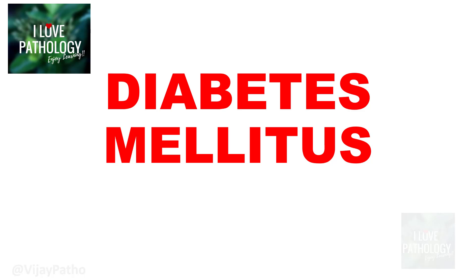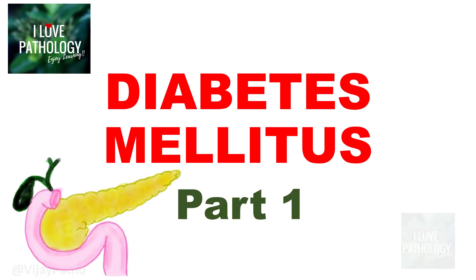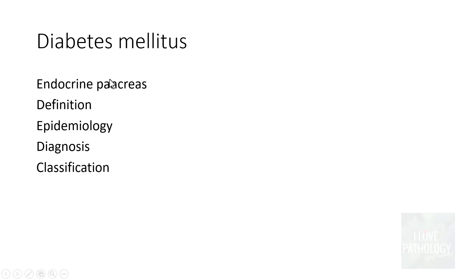Starting from today, this is a series on diabetes mellitus, and this is Part 1 of the series where we will be learning about the general aspects of the endocrine pancreas, how diabetes mellitus is defined, the epidemiological aspects, the criteria for diagnosis of diabetes mellitus, and finally how diabetes mellitus is classified.